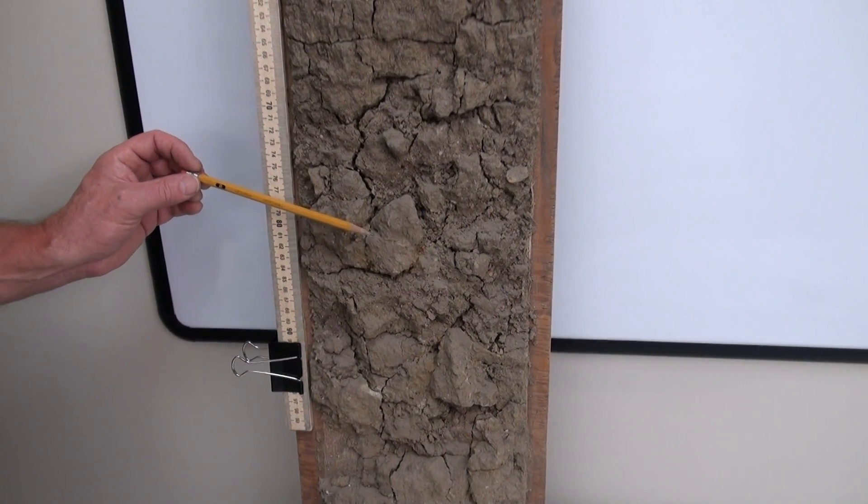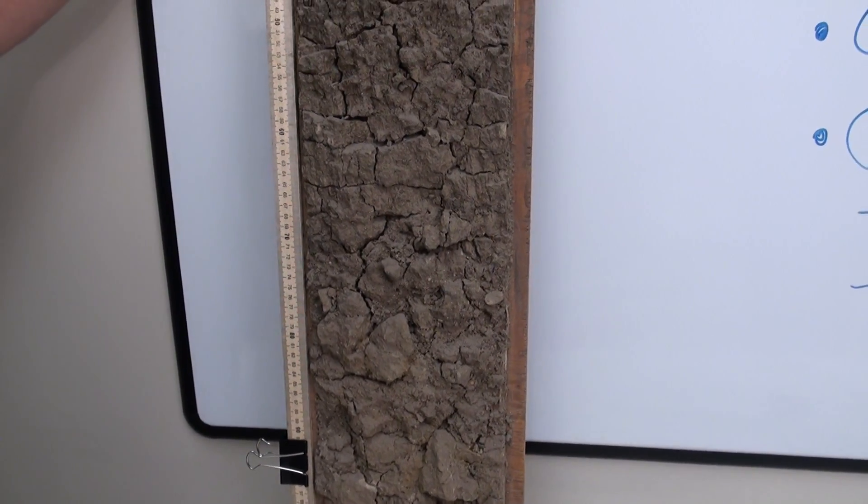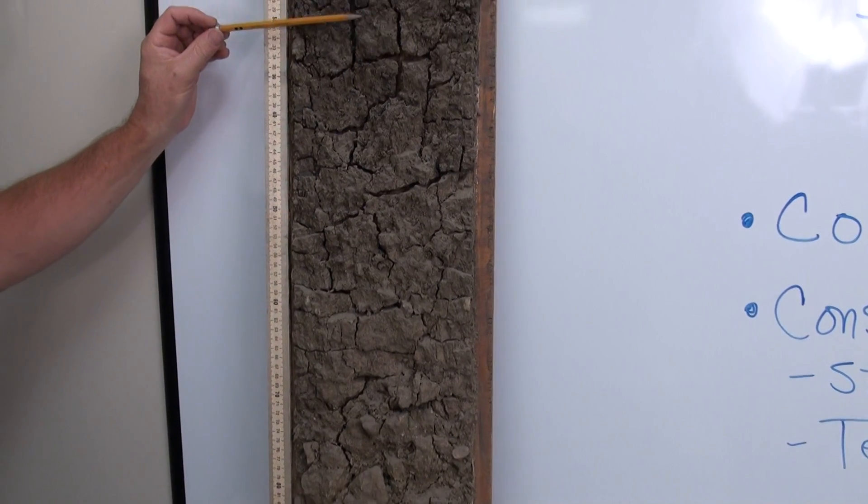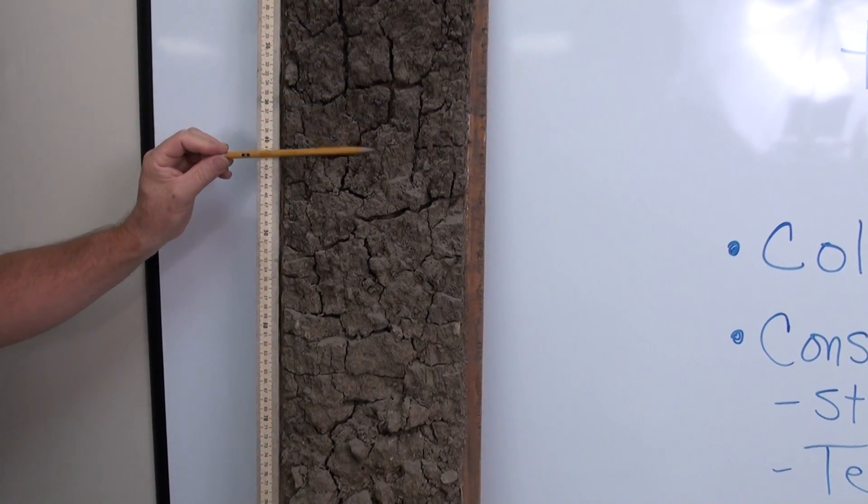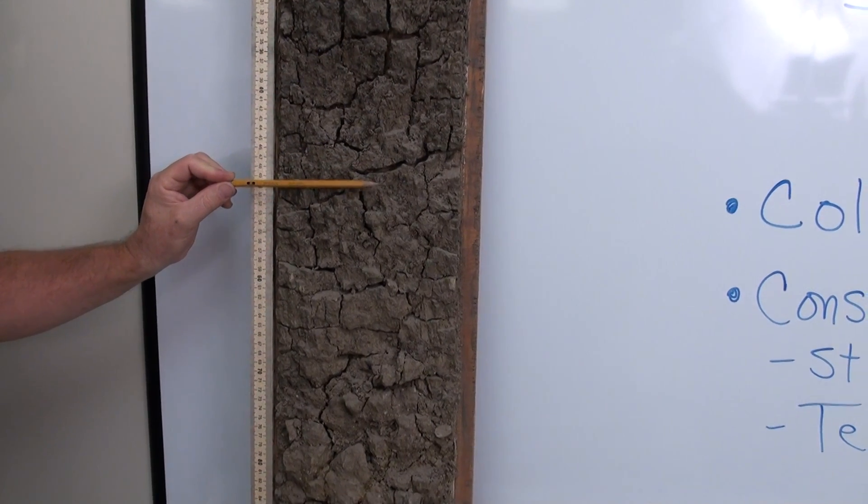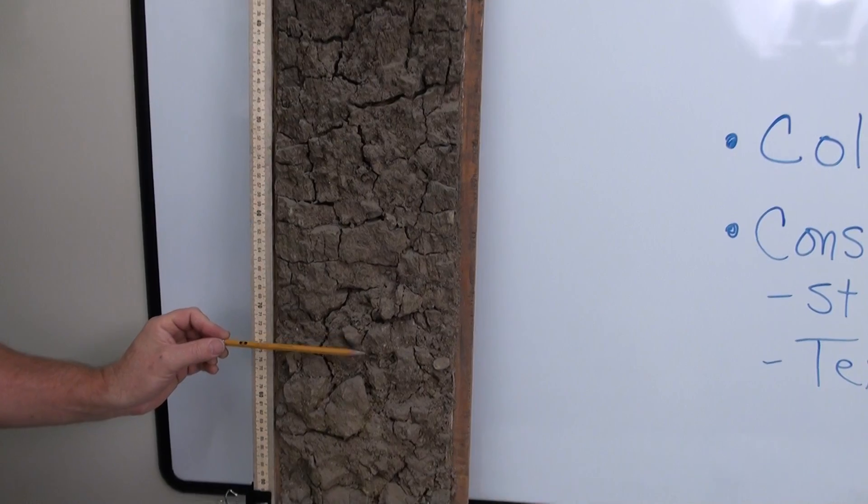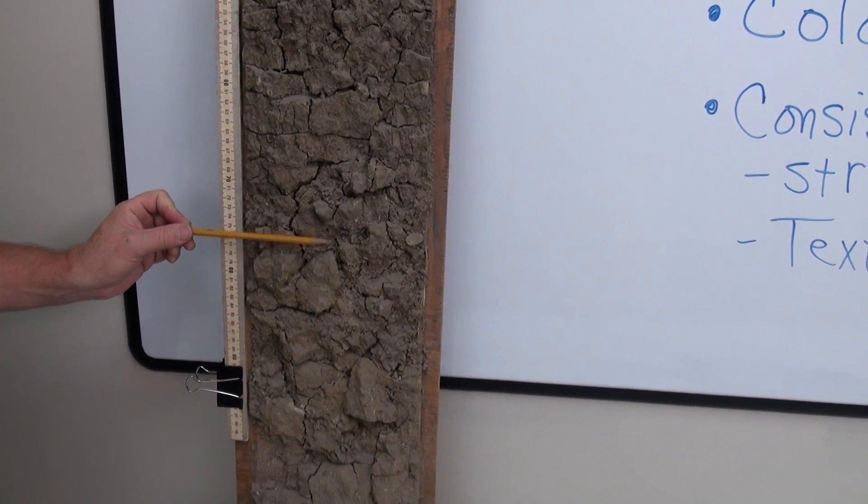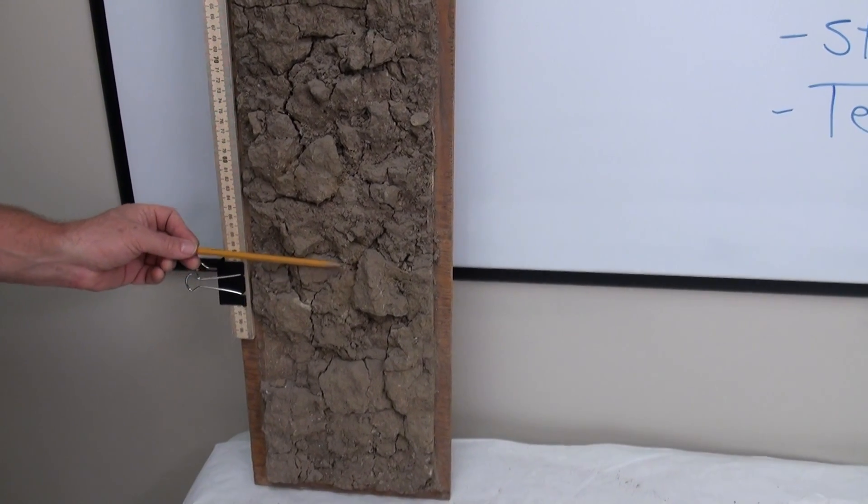Our overall B layers, subsoil layers began up at 22 or 23. First B layer down to 35, second B layer to 50, third B layer 75, and then the fourth B or maybe a BC layer from 75 to right around 90.